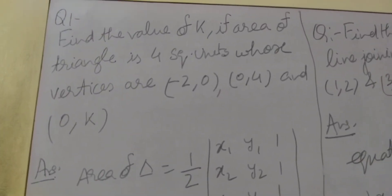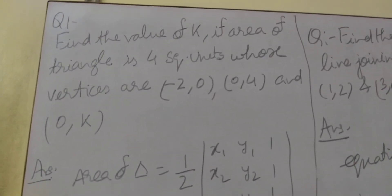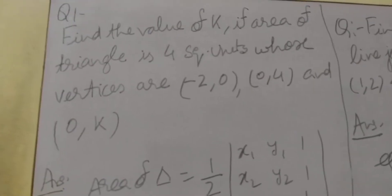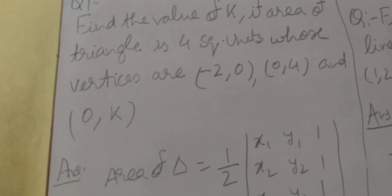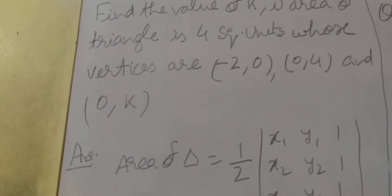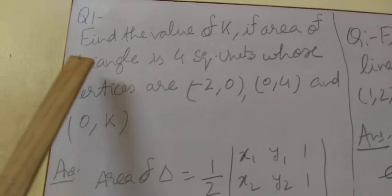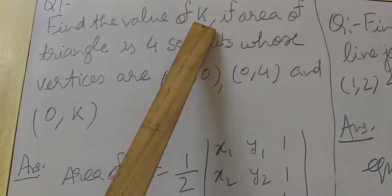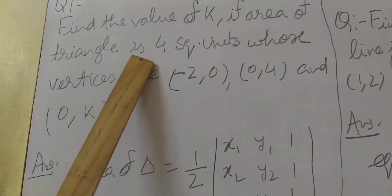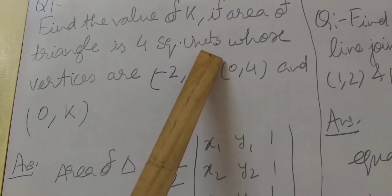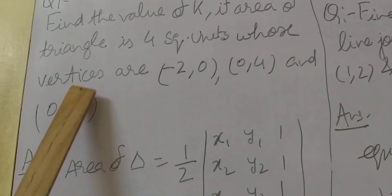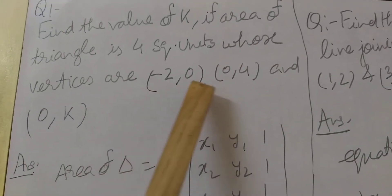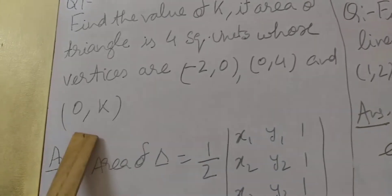Good morning students. Now students we are going to take more questions related to application of determinants. Question number 1: find the value of k if the area of a triangle is 4 square units, whose vertices are (-2, 0), (0, 4) and (0, k).